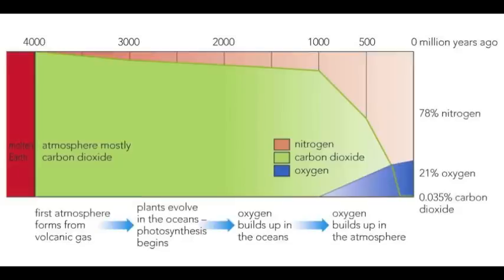Increasing levels of photosynthesis sped up the rate at which carbon dioxide was removed from the atmosphere, and the rate at which oxygen was added. This diagram shows how some scientists think that the earth's atmosphere has changed over time.